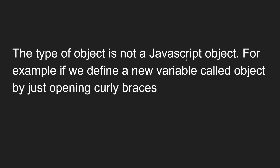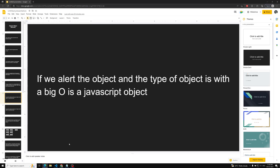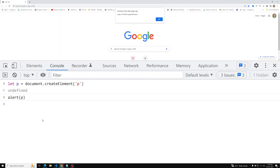Now here you need to understand that the type of object we have seen for the paragraph element is not a plain JavaScript object. For example, if you define a new variable called `obj` by just opening curly braces — `let obj = {}` — that is a JavaScript object. If you alert that object, the type shown is a JavaScript object.